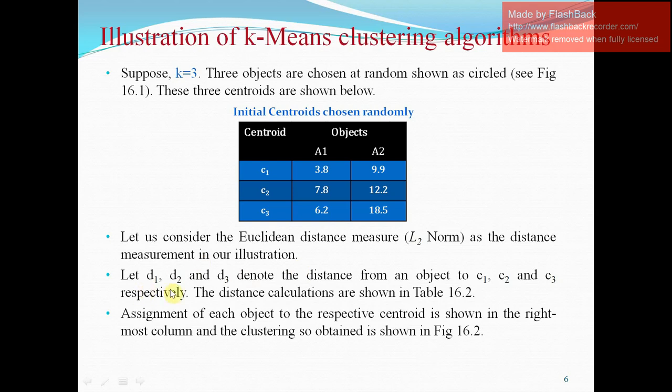Let D1, D2, D3 denotes the distance from one object to C1, C2 and C3 respectively. The distance calculations would be shown in the forthcoming slide. Assignment of each object to the respective center is shown in the rightmost column and the clustering obtained is shown in figure 16.2.